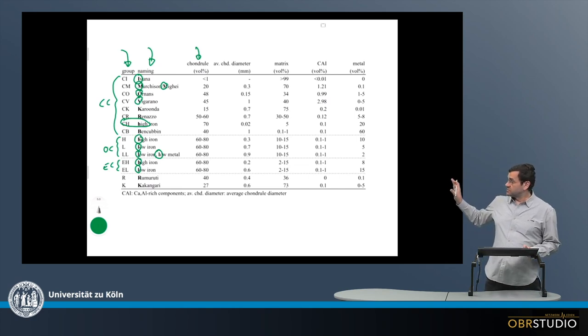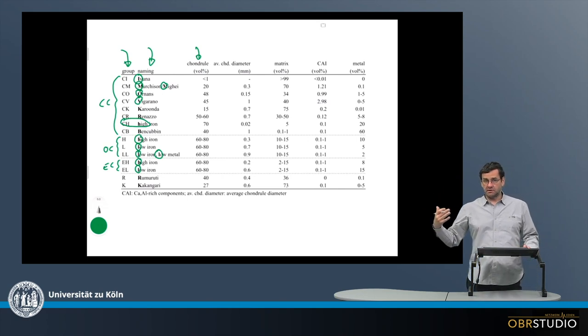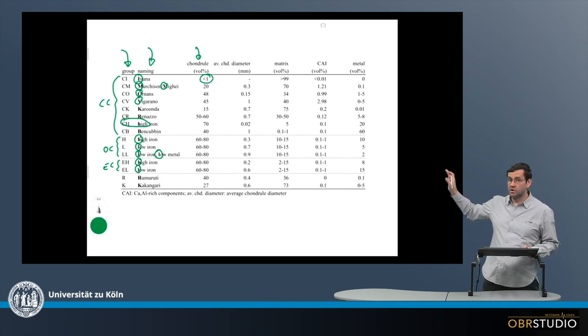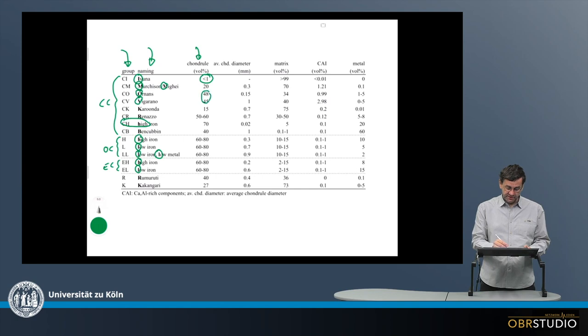So in carbonaceous chondrites, the chondrule abundance is typically around something like 50 percent, plus or minus a little bit, except for CI chondrites. CI chondrites almost have no chondrules, with maybe below one percent. Then the others always have something like 50, as you can see here, close to 50.